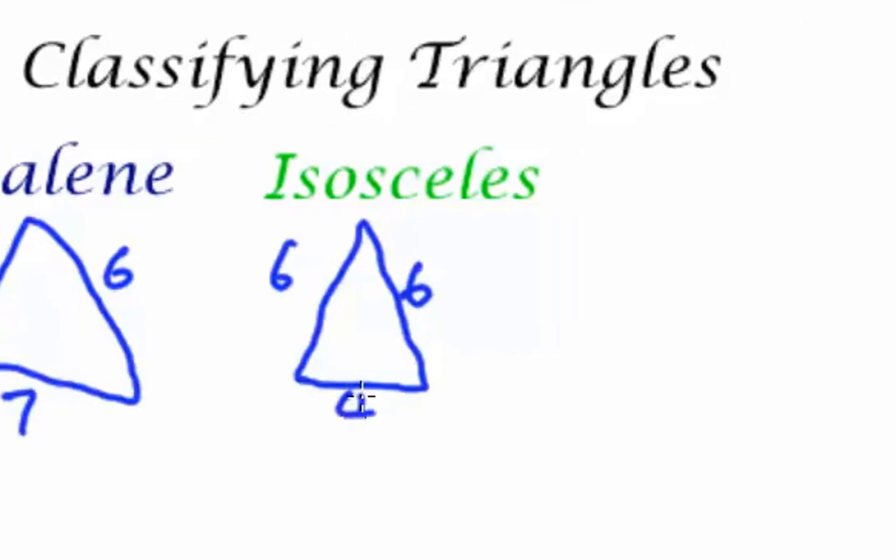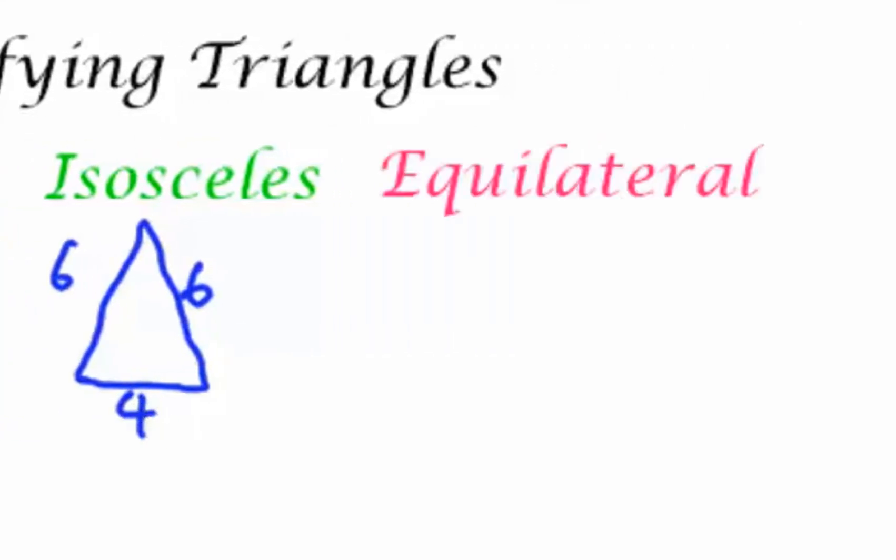And lastly, I talk about the equilateral triangle. A triangle where all three sides and then all three angles are all equal.